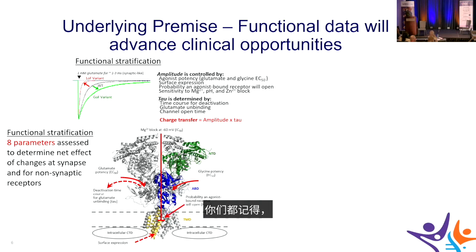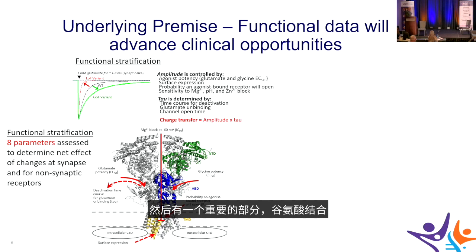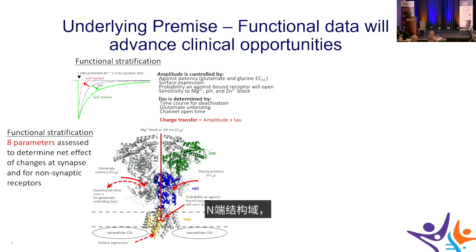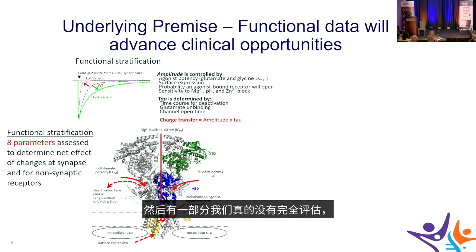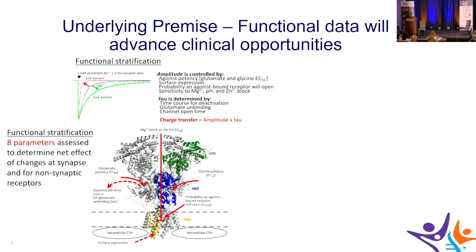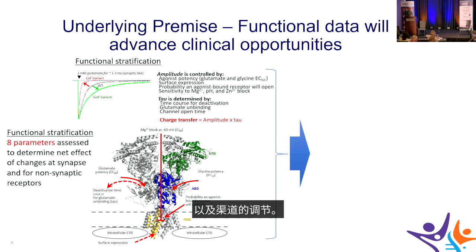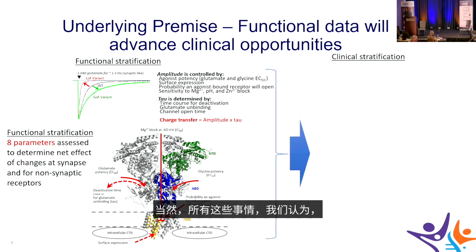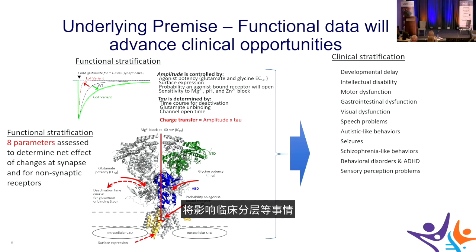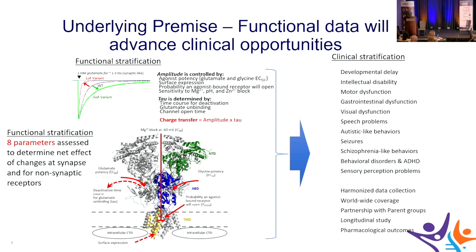The receptor protein has a membrane-spanning region, a glutamate-binding domain, an N-terminal domain sensing the synaptic cleft, a pore through the membrane, and a C-terminal domain not yet fully assessed but known to influence surface expression and channel regulation. All these features are expected to influence clinical stratification of GRIN disorder symptoms.